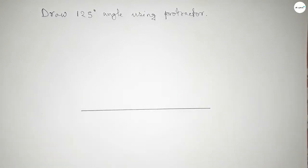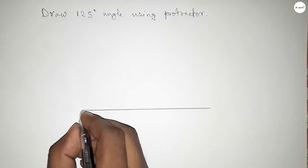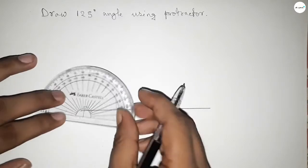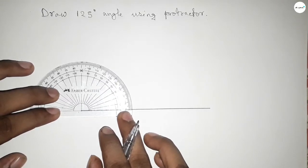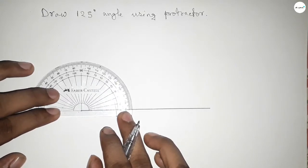Next, marking here a point to draw 125 degree angle. Now putting the protractor on the line perfectly.